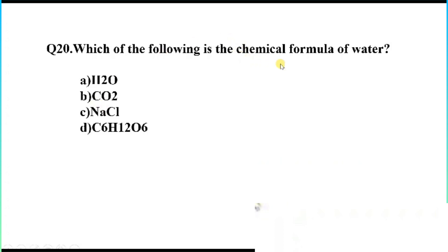Question number 20. Which of the following is the chemical formula of water? Option A, H2O. B, CO2. C, NaCl. D, C6H12O6. The right answer, Option A, H2O.